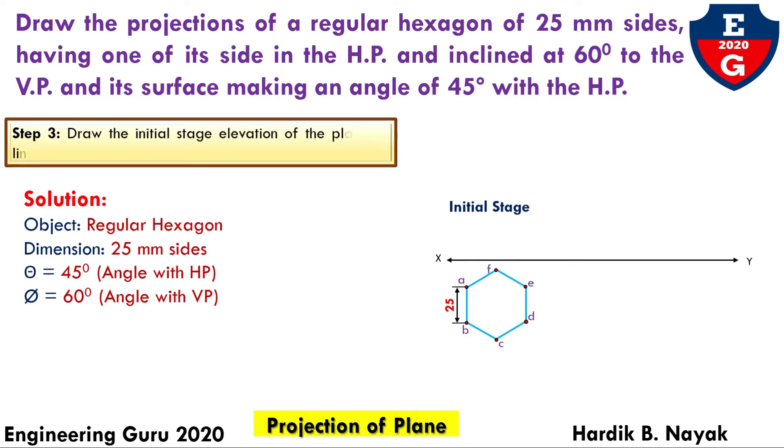For drawing the front view, we are seeing from this side. Draw the vertical projections. Draw all these points AB, FC, E, F, and draw a simple line and denote it by the points as A dash, B dash, C dash, F dash, D dash, E dash.